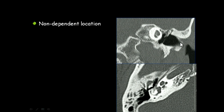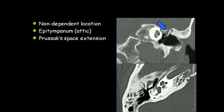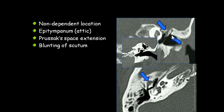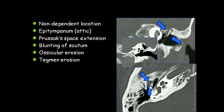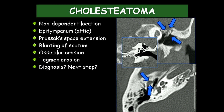Here is a soft tissue located in the attic, in a non-dependent location — actually at the Prussak's space, as you can see in the axial plane. There is blunting of the scutum; the scutum is eroded and blunted compared to a normal sharp scutum. The ossicular chain is eroded, the incus is slightly eroded, the cochlea is also unhealthy, and the tegmen is eroded — the diagnosis, which everyone knows, is cholesteatoma.